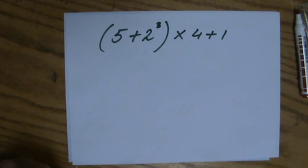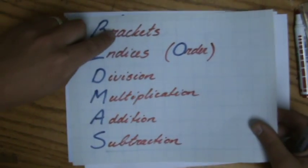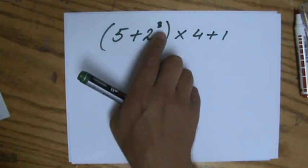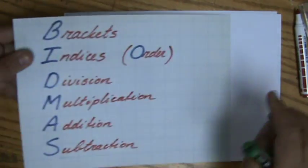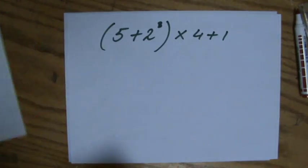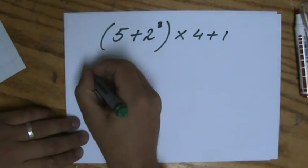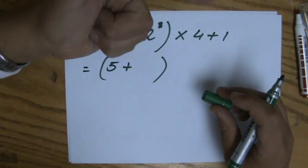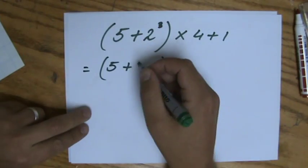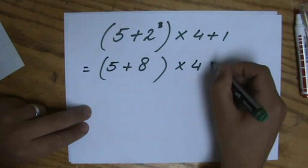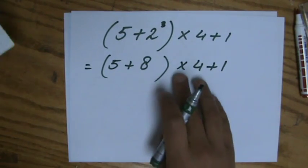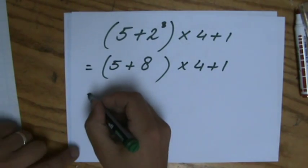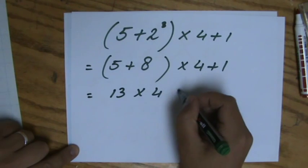So using BIDMAS, what do I do first? First I have to work out the brackets. But even inside the brackets I have 5 plus 2 to the power 3 — do I add first or do I first do the index? I first have to work out the index, which is more important. So I rewrite the brackets: 5 plus 2 to the power 3 — 2 times 2 times 2 is 8, don't say it's 6 — it's 8. So now I have the brackets, a multiplication, and an addition. First I work out the brackets, so 13 times 4 plus 1.